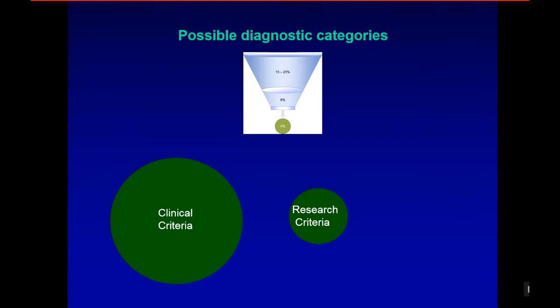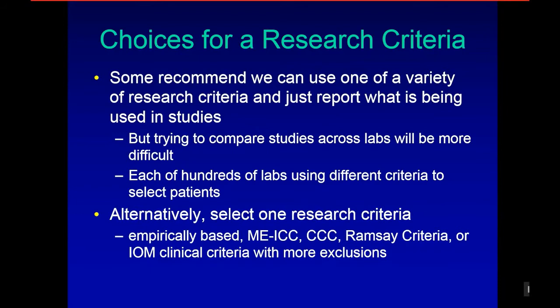There are choices for a research criteria. Some recommend using one of a variety of research criteria and just reporting what is being used — but comparing studies across labs will be more difficult, with each of hundreds of labs using different criteria. Alternatively, we could select one empirically based research criteria: ME ICC, CCC, Ramsey criteria, or the IOM clinical criteria with more exclusions, particularly the medical and psychiatric ones.